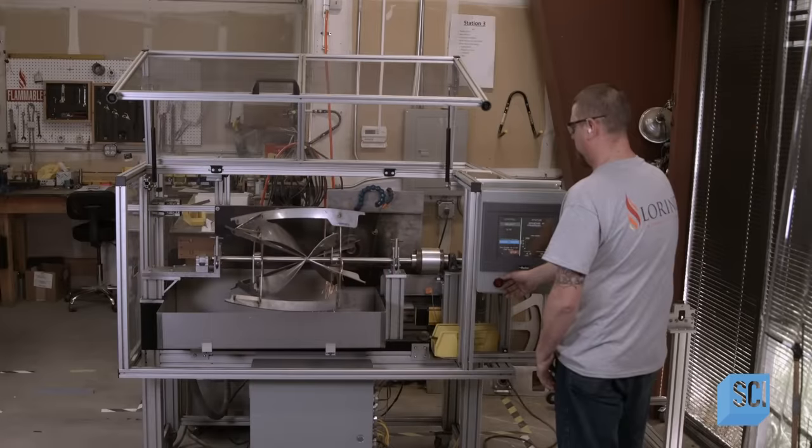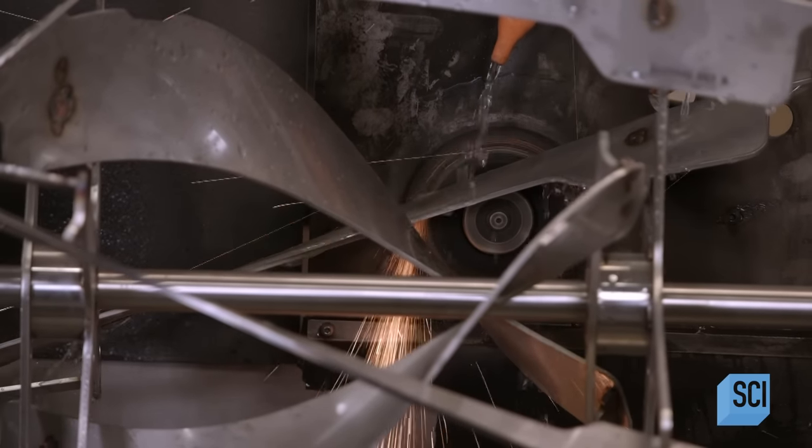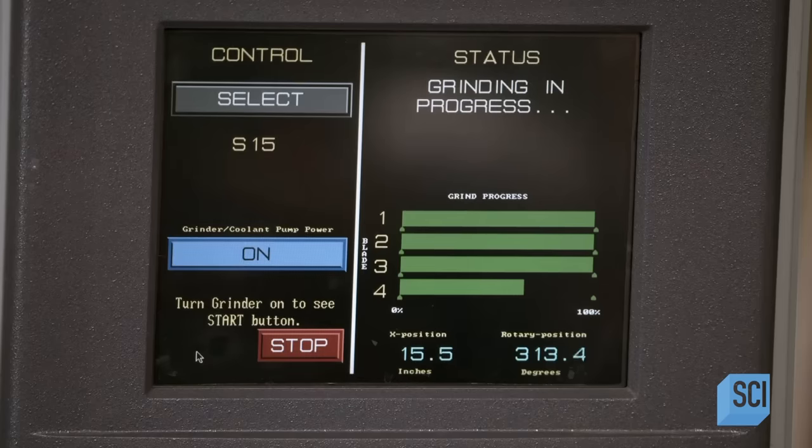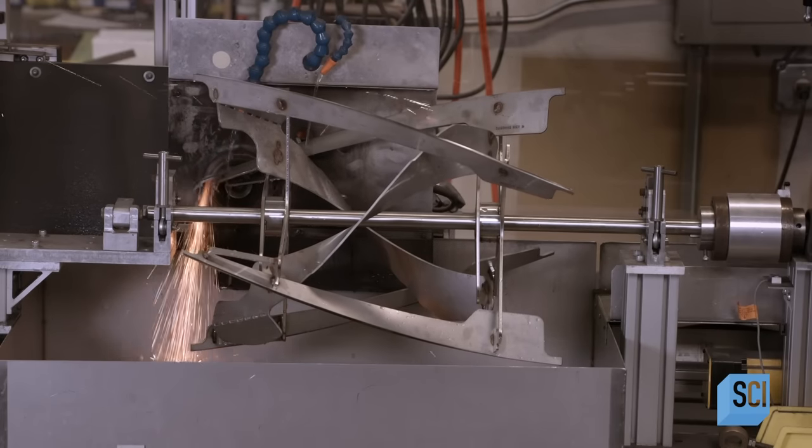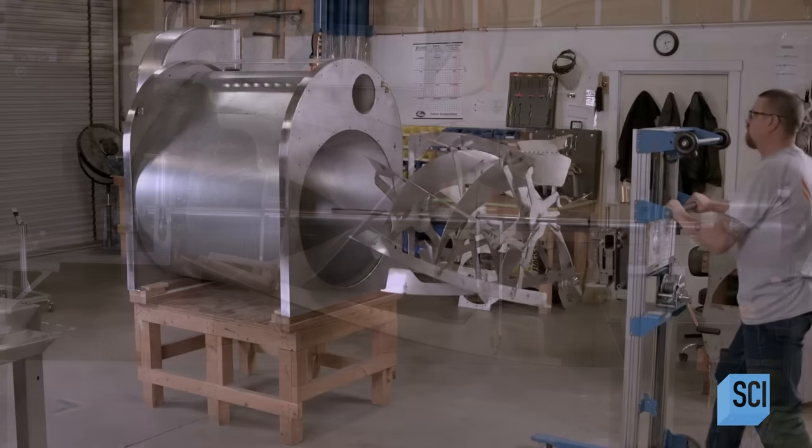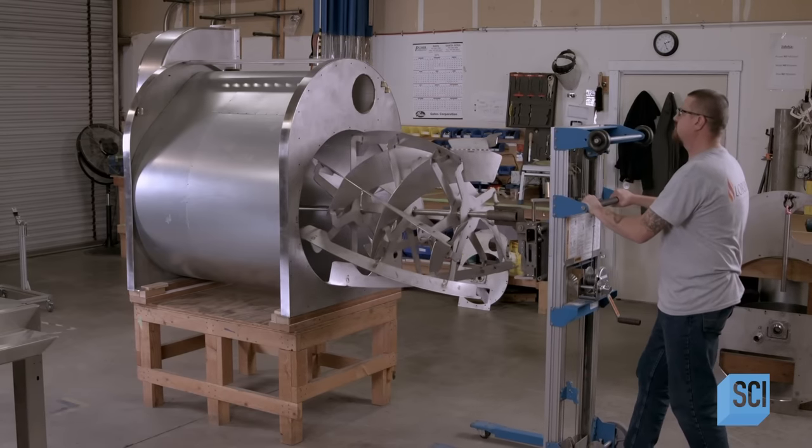A custom-designed grinding machine hones the flights to produce a small clearance of around a tenth of an inch between the edge of the paddle and the wall of the roast chamber. This design ensures the paddle is wide enough to pick up every last coffee bean without touching the wall while rotating.